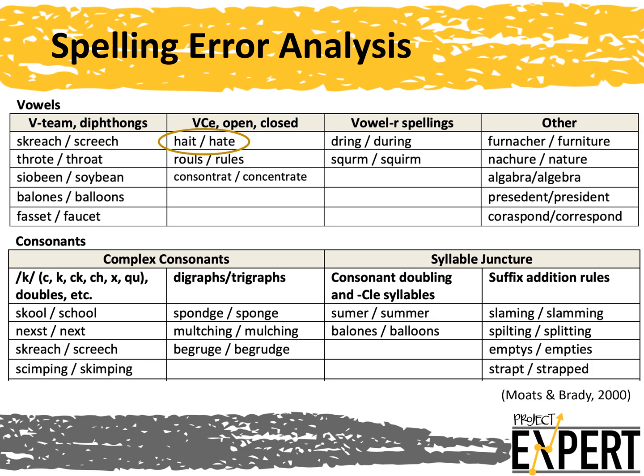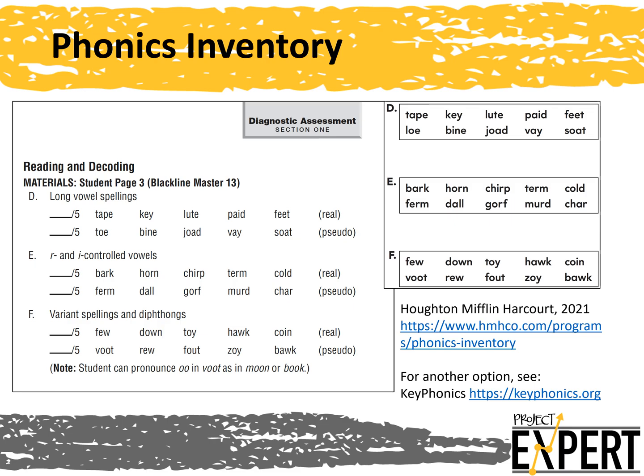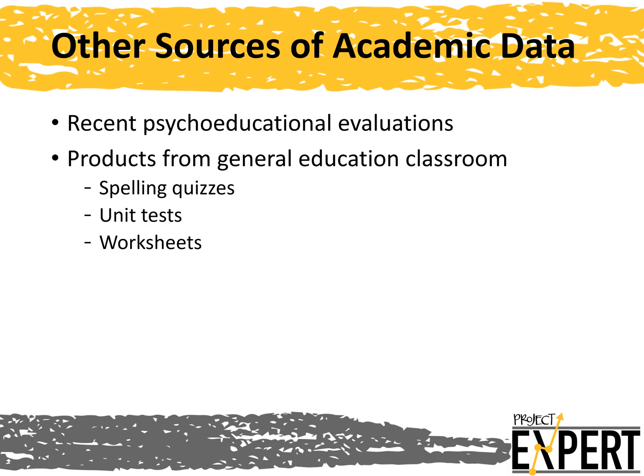The final type of informal diagnostic assessment we will discuss is a phonics inventory. As this example shows, the student reads real words that follow a pattern—long vowels or R-controlled vowels, for example—followed by nonsense words following that same pattern. The teacher marks errors, recording the student's response for each mispronounced word. As with the other error analyses, the phonics inventory will give the teacher information about what particular skills to target for that student. There are also existing sources of academic data you can explore. If a student qualifies for special education or was evaluated in the past, you can draw upon their psychoeducational evaluation. You can also connect with your student's general education teacher to see if they have materials that would help you understand the student's current skills.